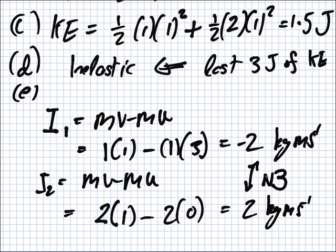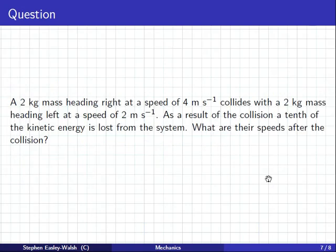Now the next example I want to do is a little bit harder. I think this example is probably similar to what you've done in high school before, perhaps. Maybe? Roughly. Can I go to the next example? Yes. A 2 kilogram mass heading right at speed 4 collides with a 2 kilogram mass heading left at speed 2. As a result of the collision, a tenth of the kinetic energy is lost. What are their speeds after the collision? So I'll do it. But just to start, I just want you to write down the info. The M1, the U1, and so on.